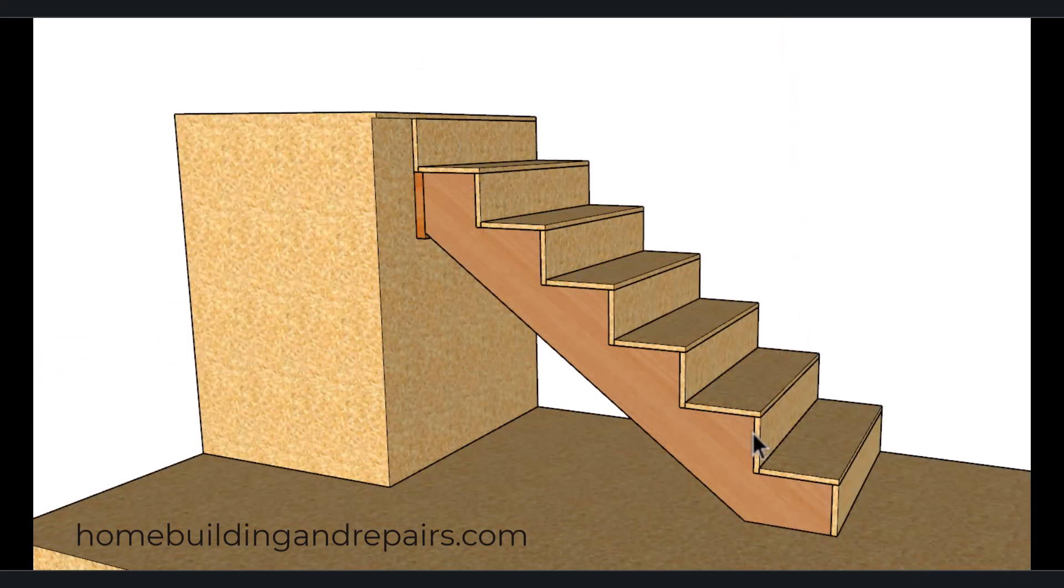Now this stairway has the same riser height going all the way through the stairs and also a level surface at the bottom and the top of the stairway. And the overall rise is going to be four foot four and a half inches, providing us with seven and a half inch risers.